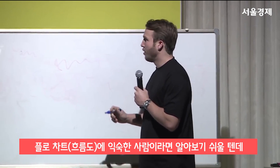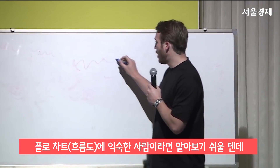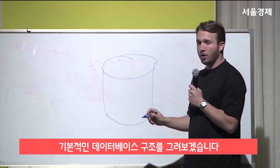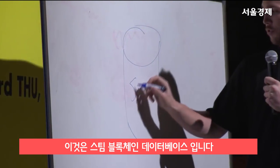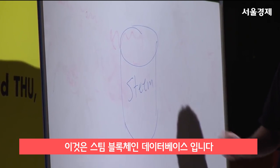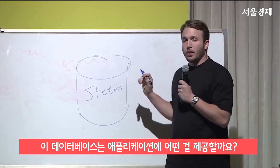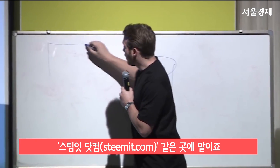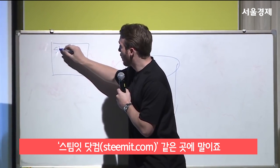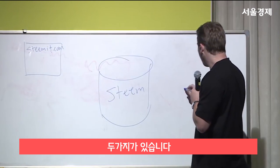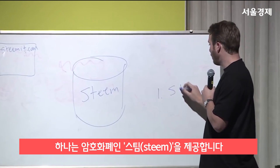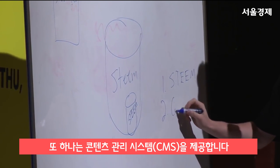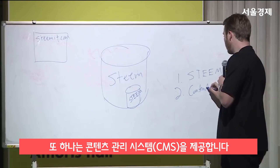Anyone familiar with flow diagrams will recognize the shape that I'm drawing now. It's your classic database structure, and this database structure represents Steem, the blockchain. What this database provides to applications like Steemit.com is two things: one, it provides cryptocurrency — Steem — and it also provides content management.